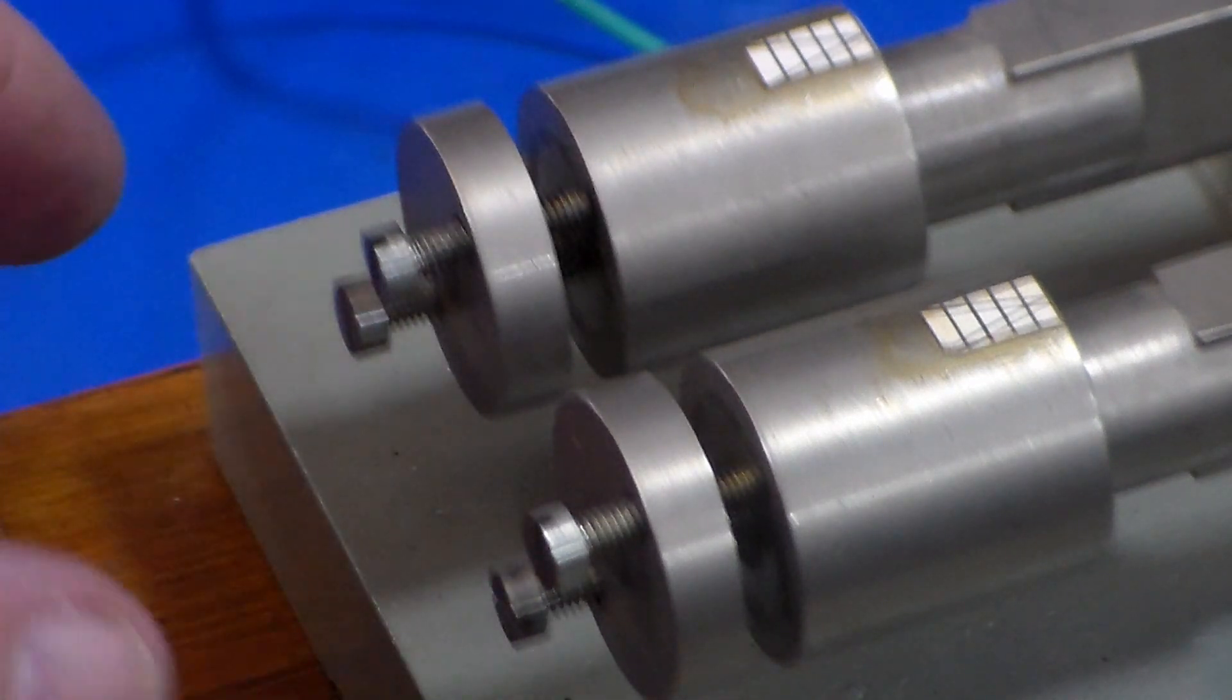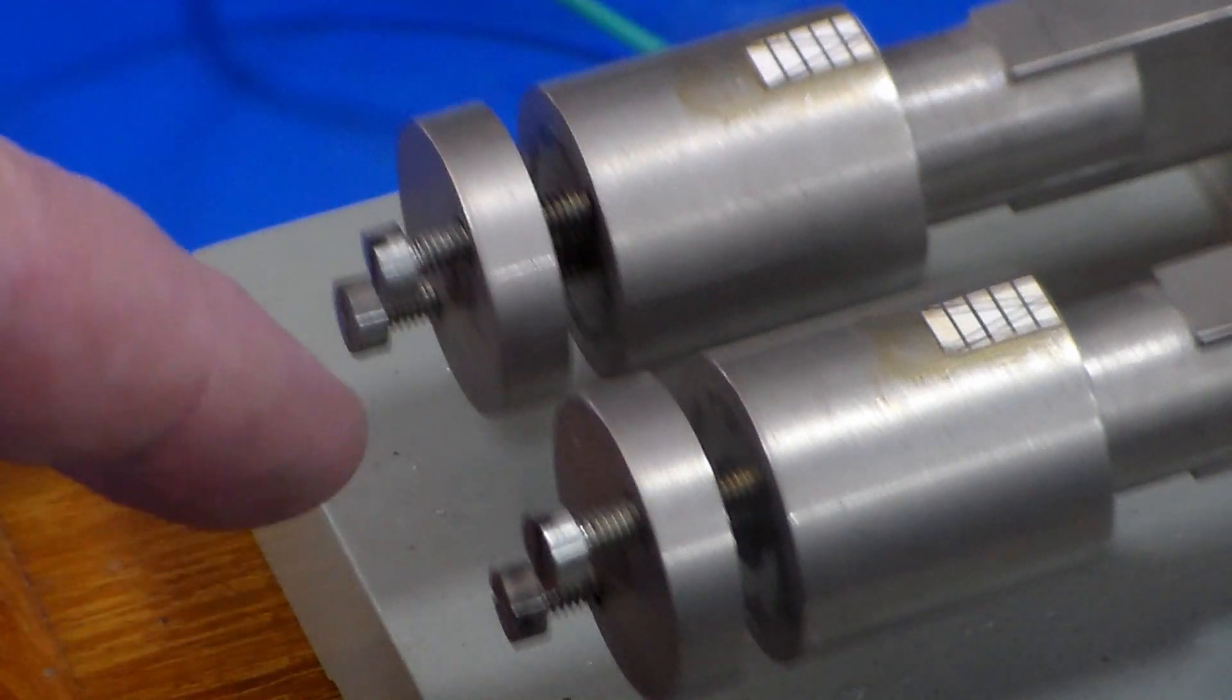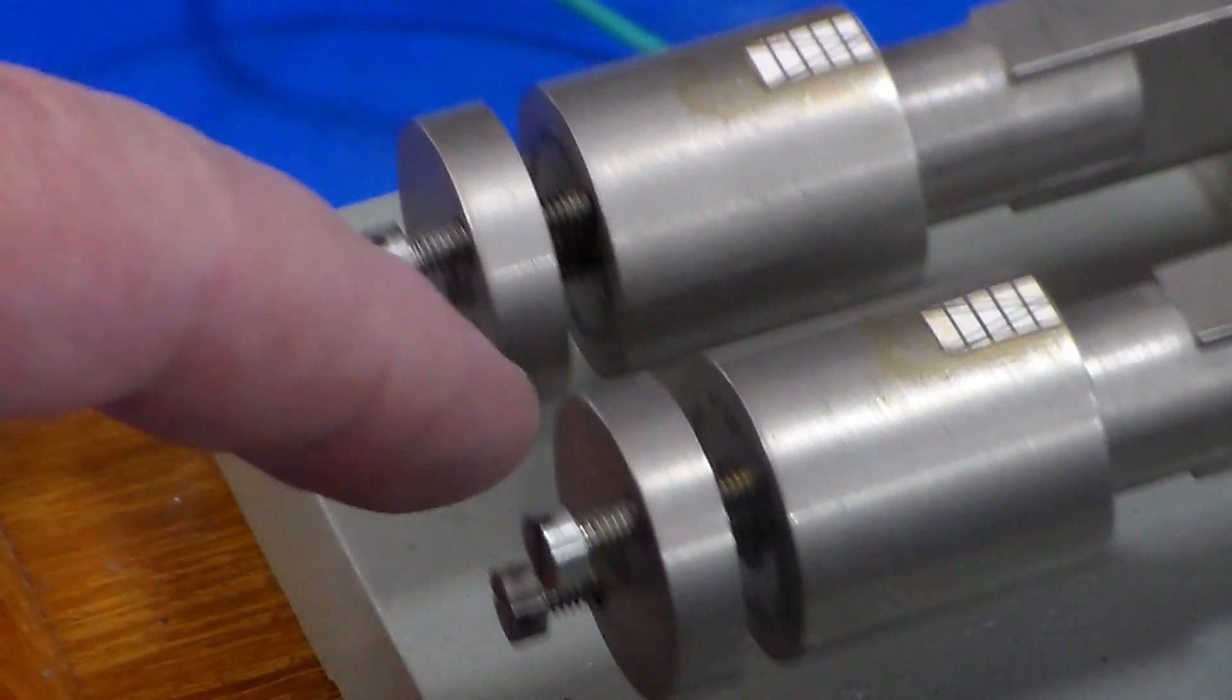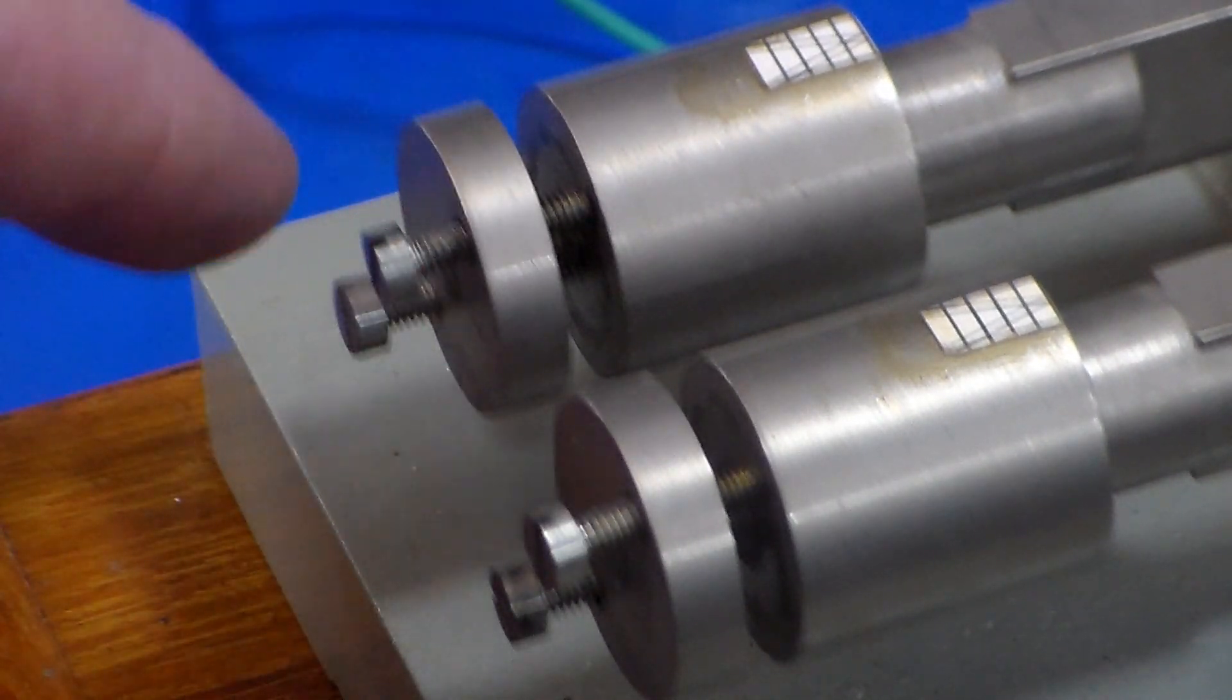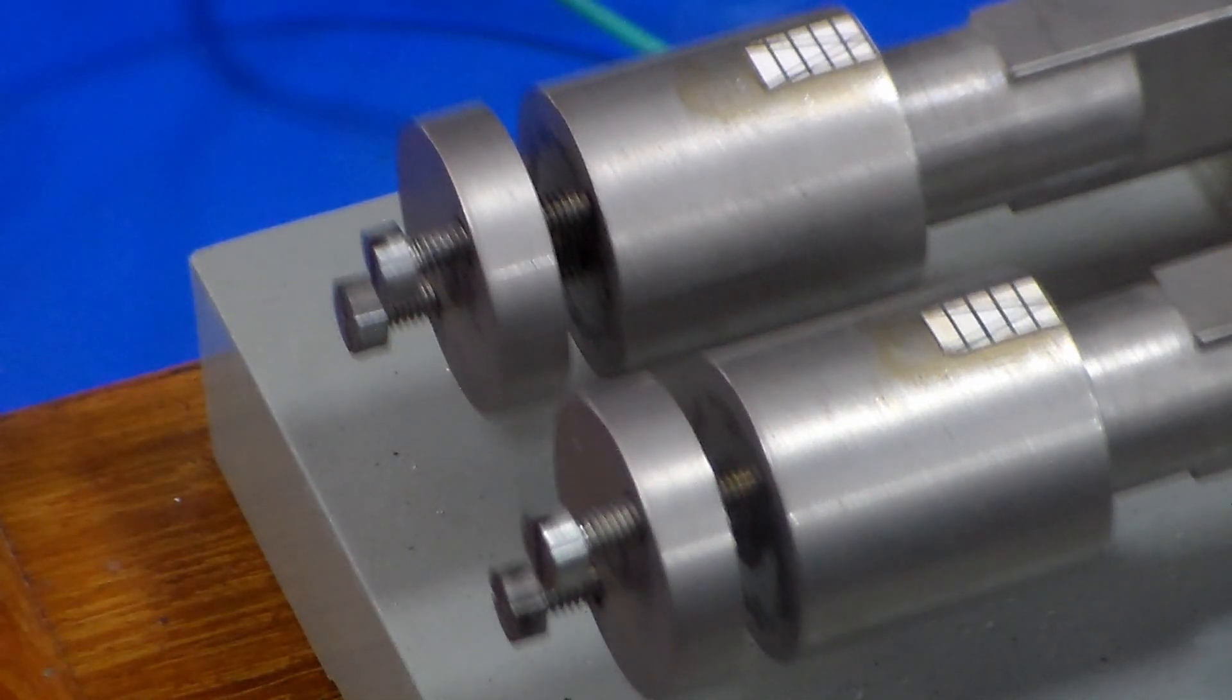You can see here on the ends of the fork these weights and these additional weights here that can be adjusted, so you can actually fine-tune the operating frequency of the fork to give you as precisely as possible, given it being a mechanical system. But there's quite precise adjustment of the frequency available.